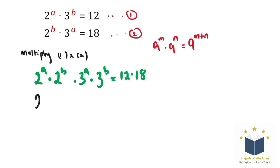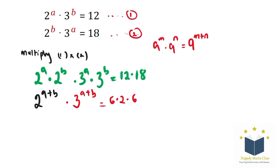So here we have 2 to the power of A plus B, multiplied by 3 to the power of A plus B. So 12 can be split as 6 multiplied by 2, while 18 can be written as 6 multiplied by 3.